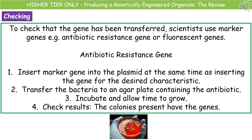Before we let the bacteria grow, we need to check that the gene has actually been successfully transferred. There are a couple of ways to do this, and basically what we're doing is using something called a marker gene. The two ways we can use a marker gene are either an antibiotic resistance gene or a fluorescence gene — the process is pretty similar, but I'll take you through each in turn.